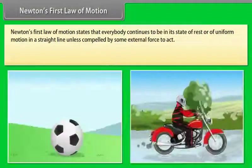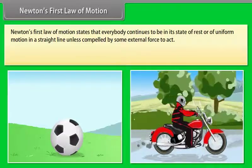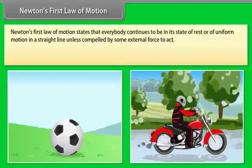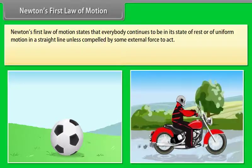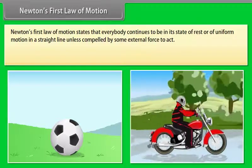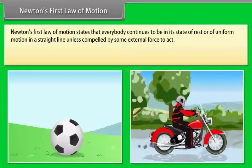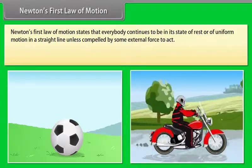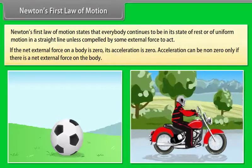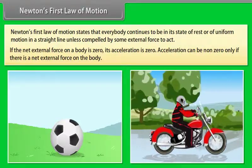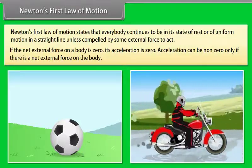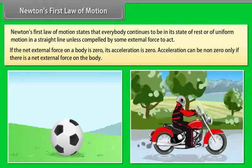Newton's first law of motion states that every body continues to be in its state of rest or of uniform motion in a straight line unless compelled by some external force to act. If the net external force on a body is zero, its acceleration is zero. Acceleration can be non-zero only if there is a net external force on the body.